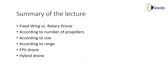We looked at the first two types of drones: fixed-wing and rotary drones. We further classified rotary drones based on the number of propellers, size, and range. We also looked at FPV drones and finally hybrid drones, which combine rotary and fixed-wing designs. It is very important to keep these classifications in mind especially while deciding which drone to use for different applications. The next lecture talks about the past, present, and future of drones. Thank you very much.